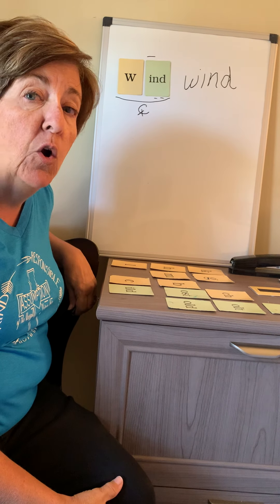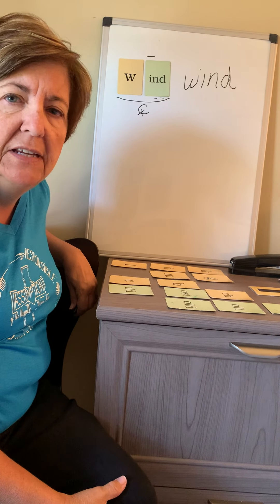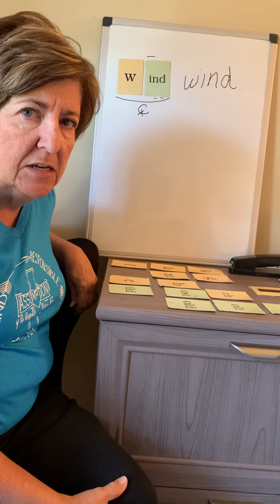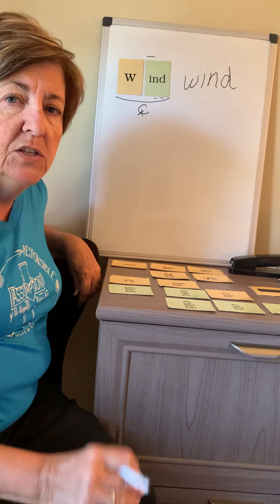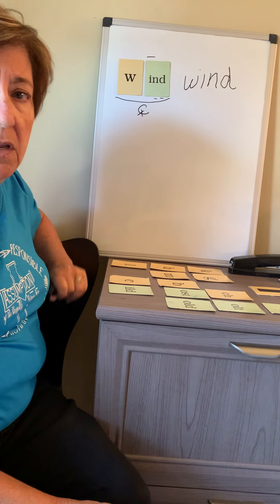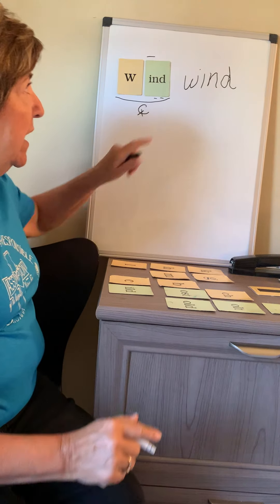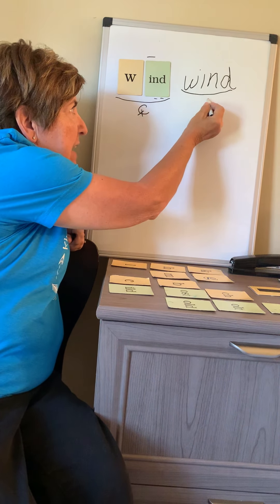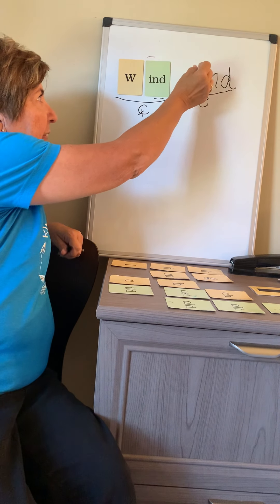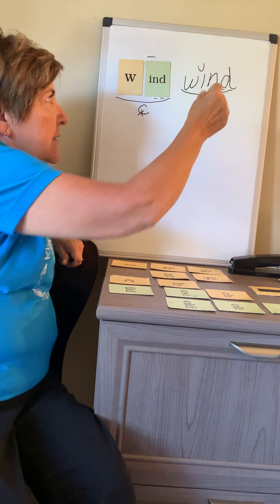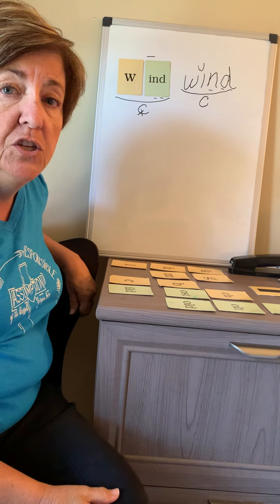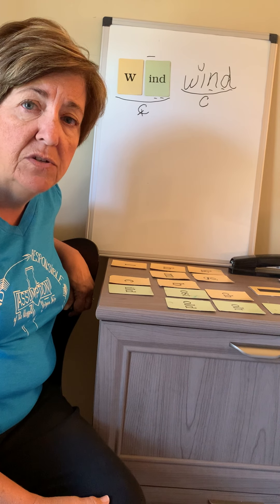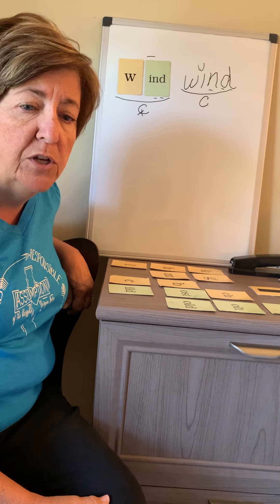Now this is an example of a homograph. These are two words that are spelled exactly the same, but they sound differently and they mean something different. So when I wind up a toy, that would be this one. But when the wind is blowing, that would be this word, and it is not an exception — it is just closed. The I is short. So you would use whatever words are around it, or the pictures in the story you're reading, to help you know which one it is.